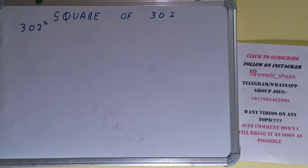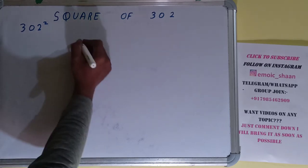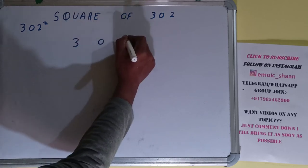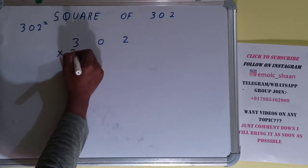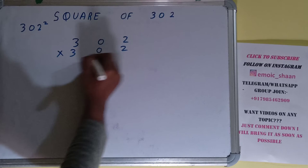Okay, so now coming on to the solution. Square basically means multiplying the number by itself. The number over here is 302, so to find the square of it, we need to multiply by itself, that is 302.